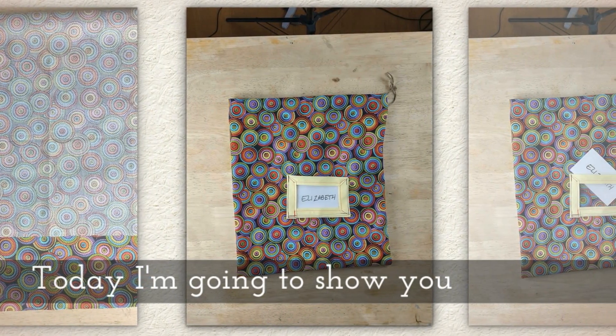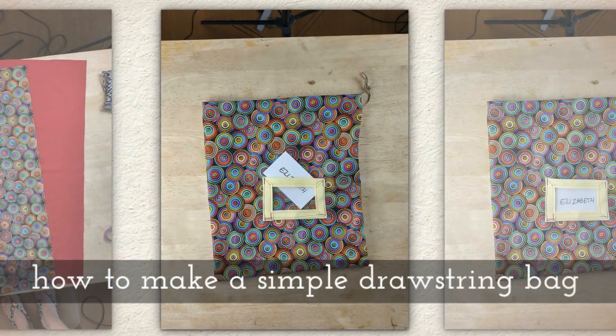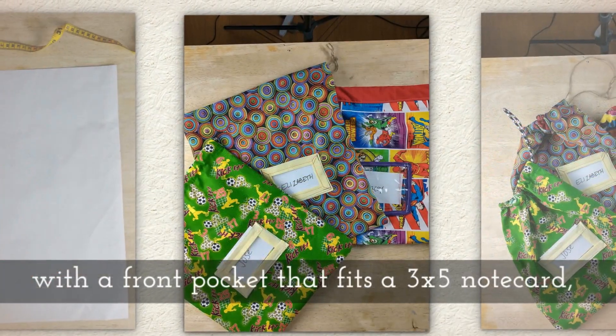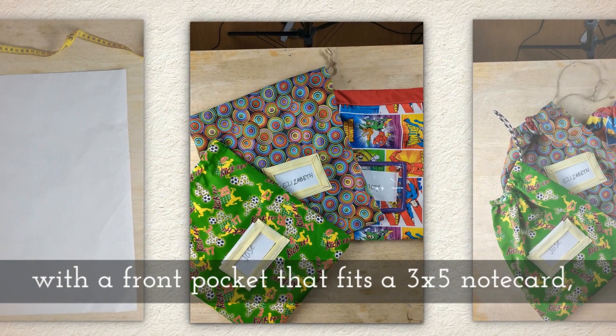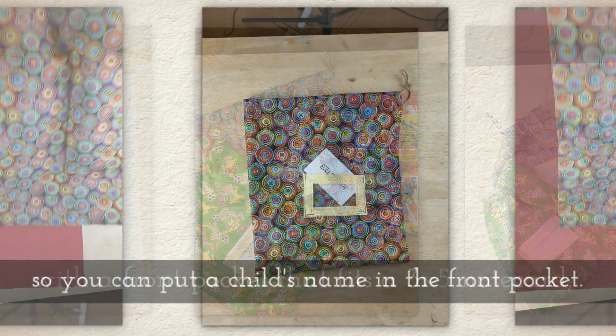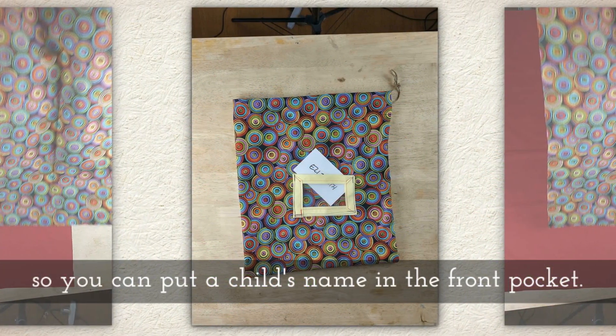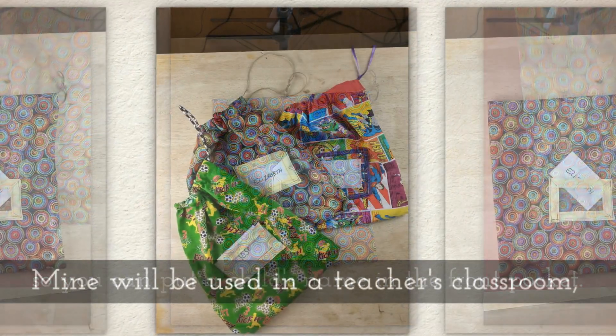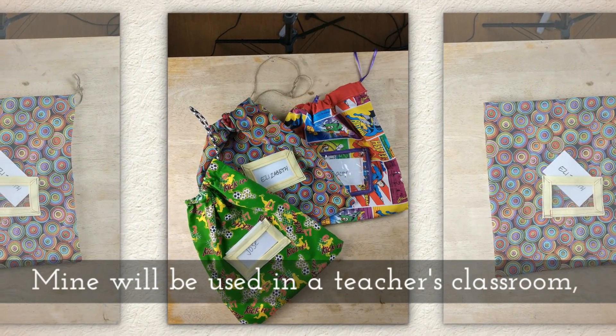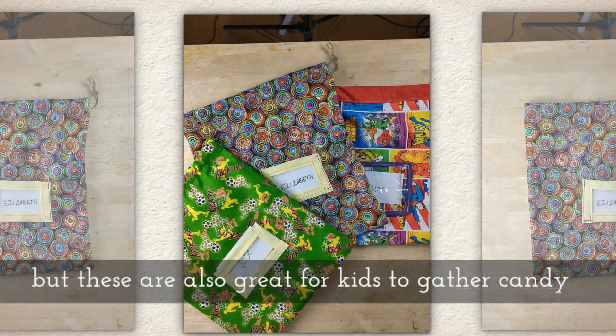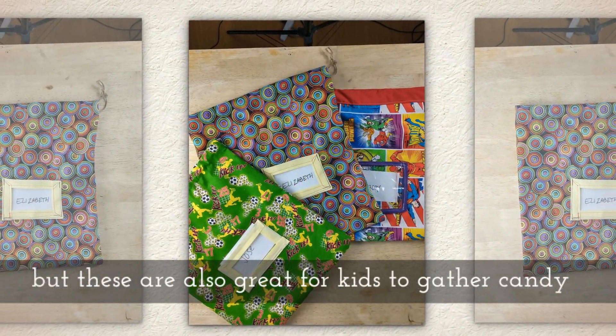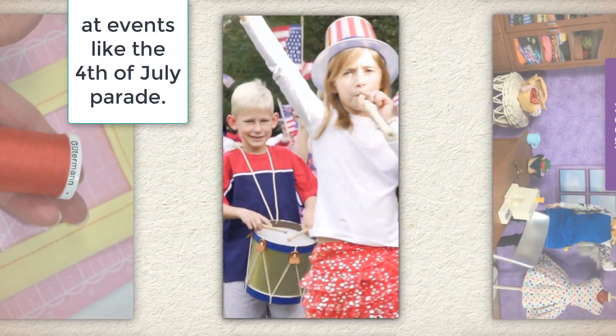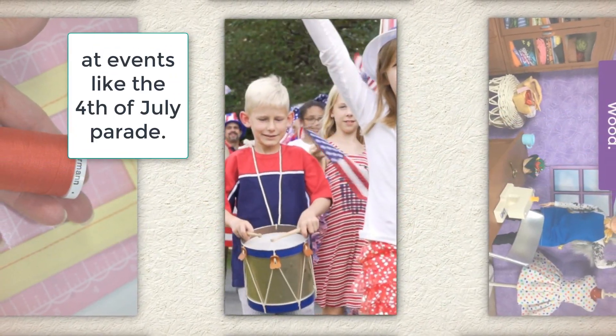Today I'm going to show you how to make a simple drawstring bag with a front pocket that fits a 3x5 note card so you can put a child's name in the front pocket. Mine will be used in a teacher's classroom, but these are also great for kids to gather candy at events like your local 4th of July parade.